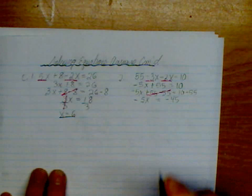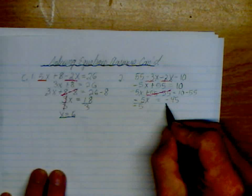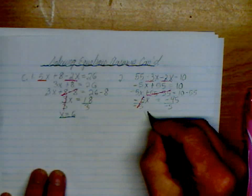And now I've got a negative 5 stuck to the x. So the opposite is to divide by a negative 5. So x is equal to 9.